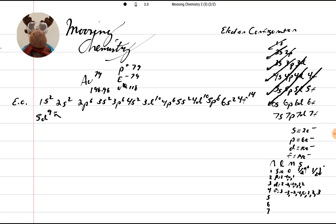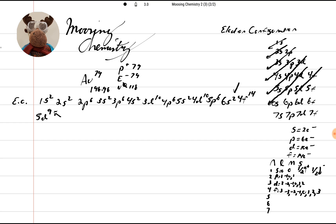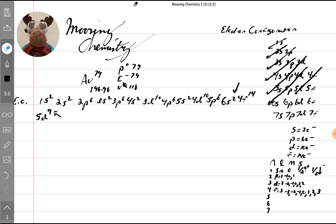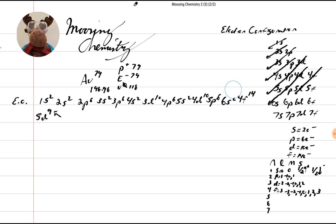You can't take it from the lower shell, so you have to take it from the upper. So you see where they have this 6s2 right there? What you're going to do is borrow one from there. So we're going to make this 6s1, and carry that electron over to 5d9. So now we're going to change that to 5d10. That's an exception — so you've got to pay close attention. Our orbital notation shows it a little bit better.